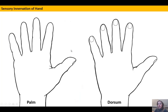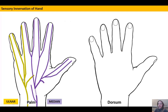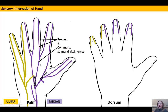We'll now consider the innervation of the hand. Drawing in the palmar aspect, we have the ulnar nerve and the median nerve. The median nerve passes under the flexor retinaculum, where it branches into a medial and a lateral branch. From the lateral branch there is a small curving-back branch, and the remaining branches from both medial and lateral divisions become the common palmar digital nerves, which run toward the interspaces — the webs between the fingers — and divide into proper palmar digital nerves.